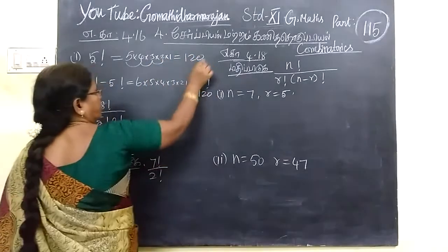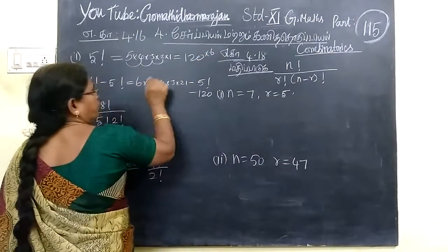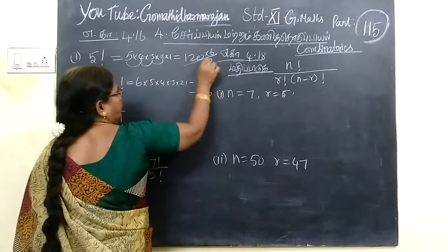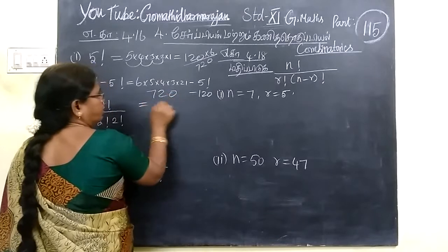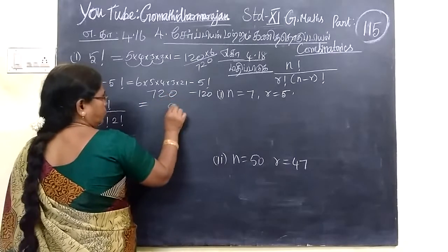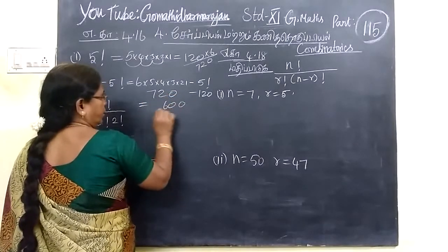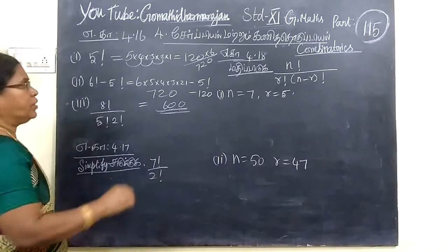720 minus 120. So you are getting 600. So the answer for this is 600. Here, the answer for this is 120. And we come to the next one.